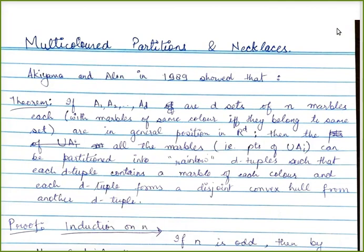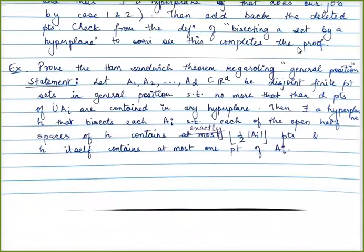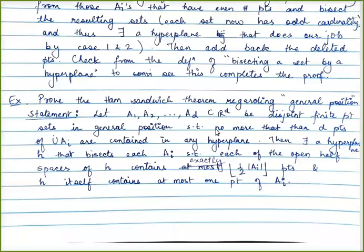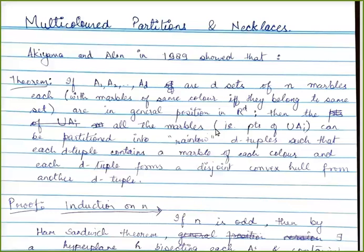Before we start today's lecture, I want to mention that in the previous lecture I left an exercise — the general position version of the ham sandwich theorem. I made a mistake where I said that the hyperplane should contain at most floor of half the points; it should be exactly that many points. This is a stronger version of the one we did in the previous lecture.